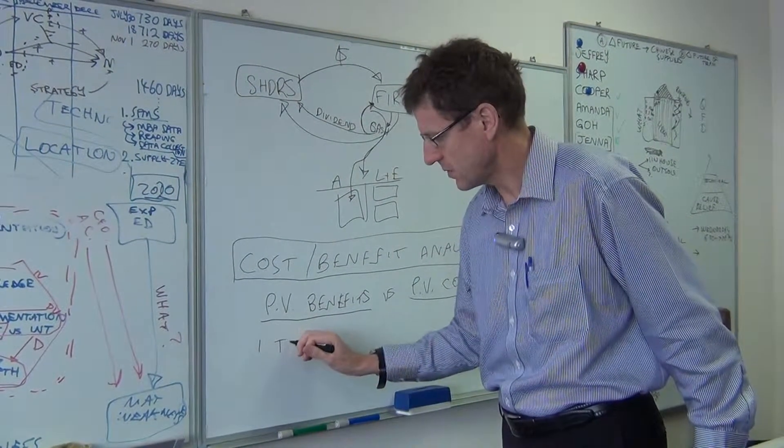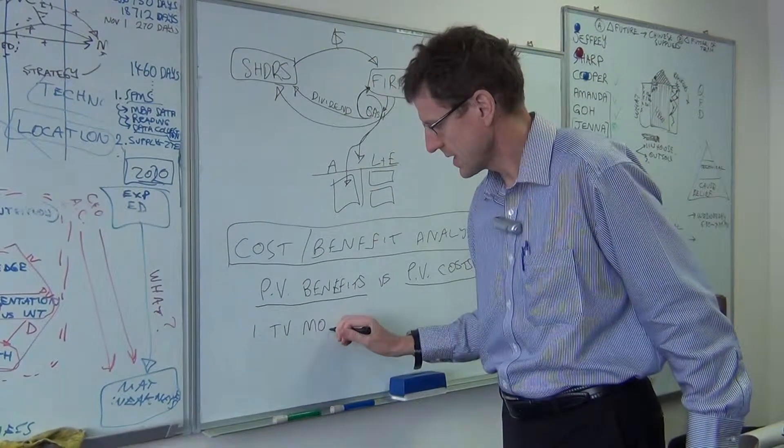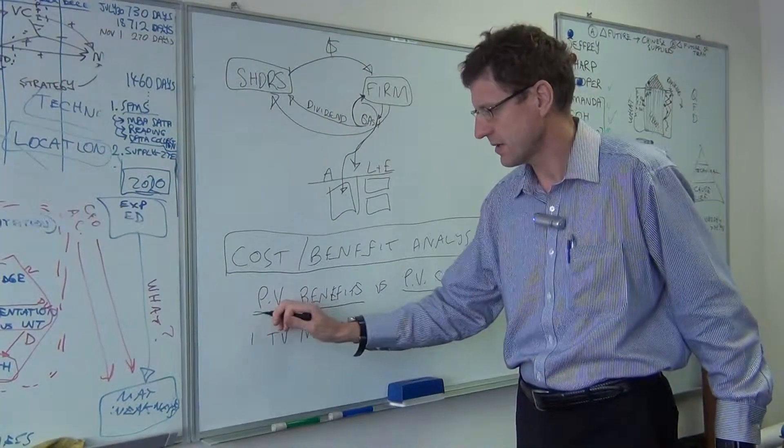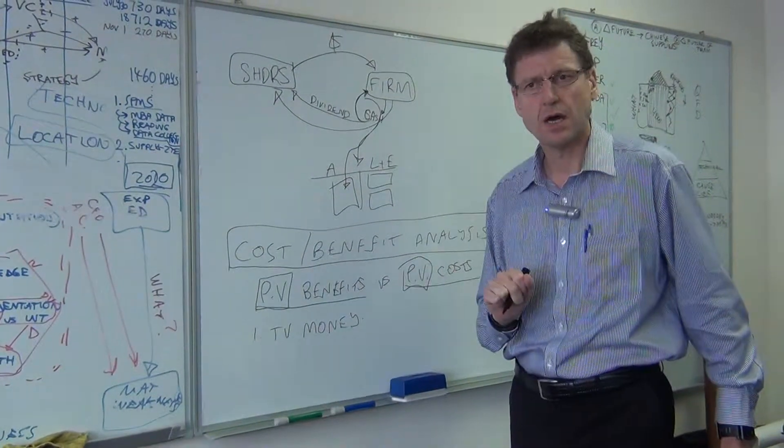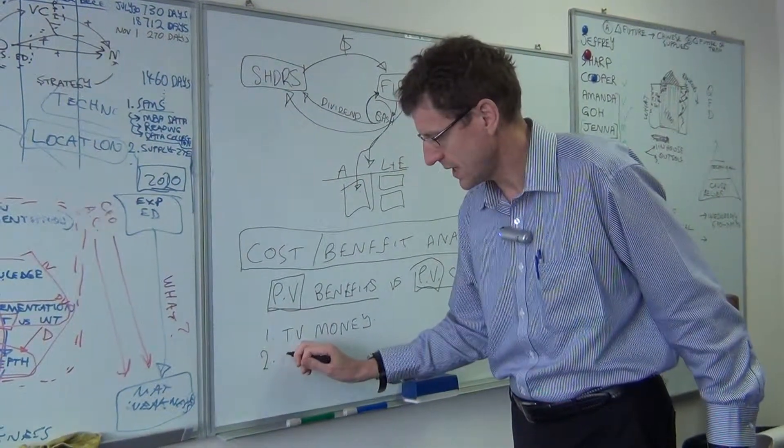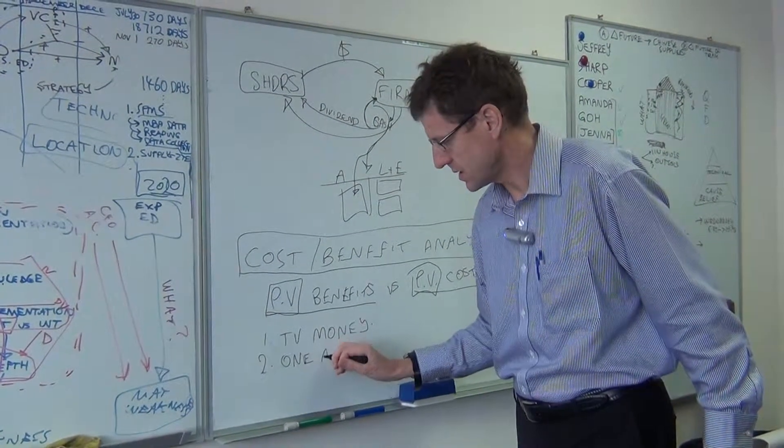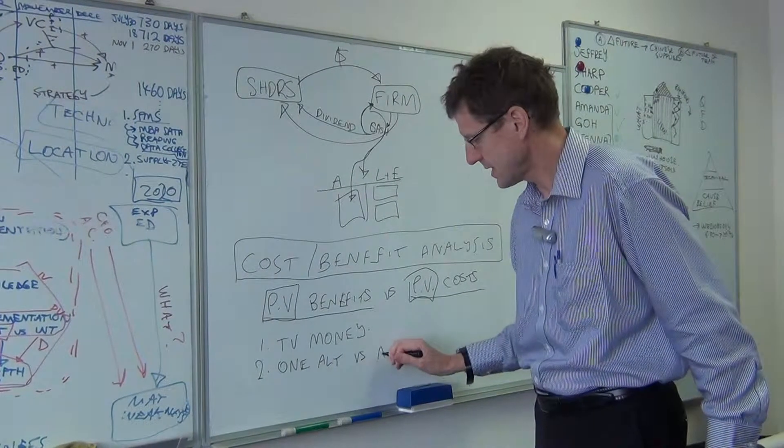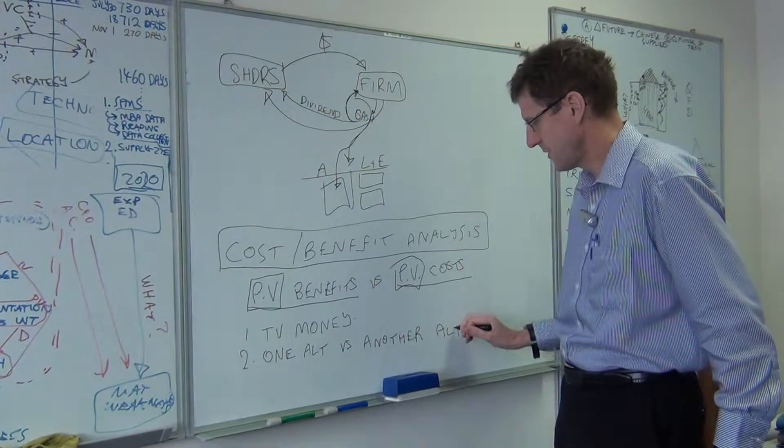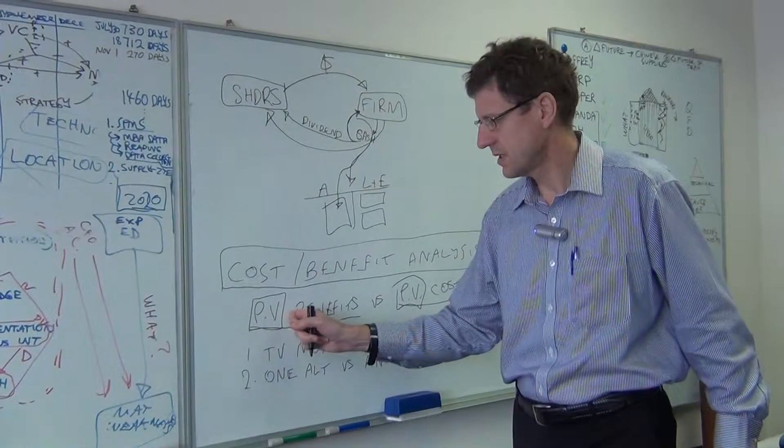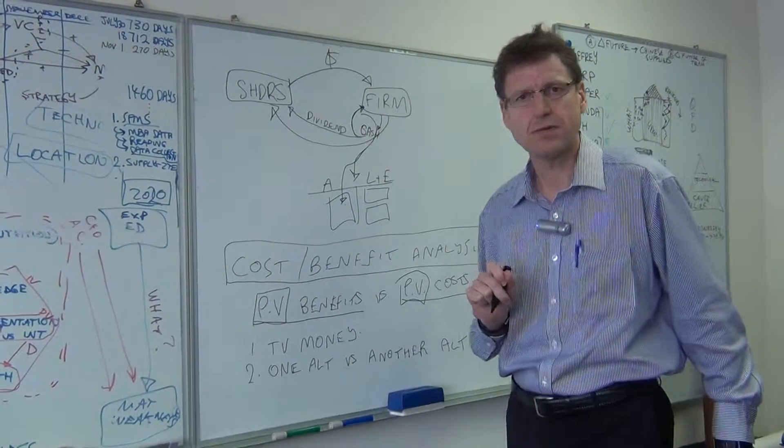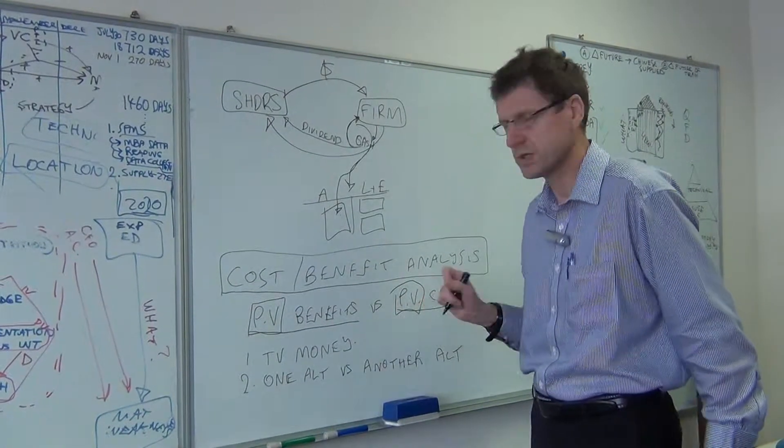Because of, one, time value of money. And we're going to cover in detail how we use time value of money to actually work out the net present value of the benefits and costs of a particular investment alternative. Other considerations are we may just want to compare one alternative versus another. So both alternatives may have positive net present value, that is, their present value of the benefits is greater than the present value of costs. But we want to choose the one that has the highest present value of benefits minus the present value of the costs.